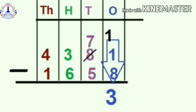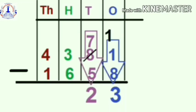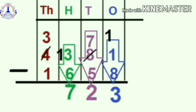Understood? Now in the tens place you have 7 minus 5. You can subtract 5 from 7 because 5 is a smaller number. So your answer is 2. Now let's go to the hundreds place: 3 minus 6. Again, 6 is a greater number, so you cannot minus it. So, 3 is going to borrow one number from the next digit — that is, from 4. So 4 gives one to 3, and 3 becomes 13, while 4 is reduced to 3. Now you can minus 6 from 13, and your answer is 7.